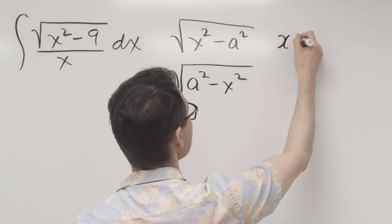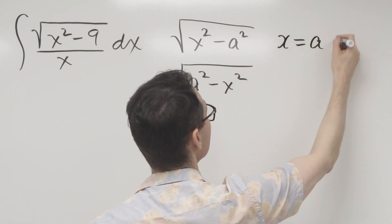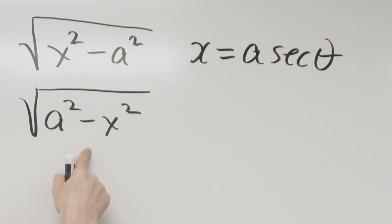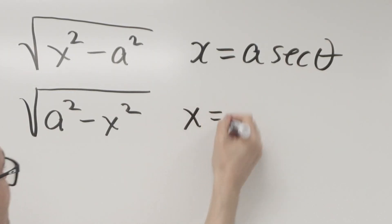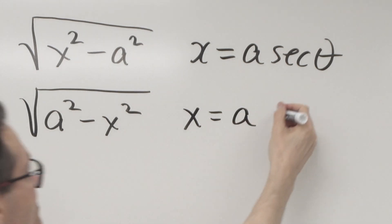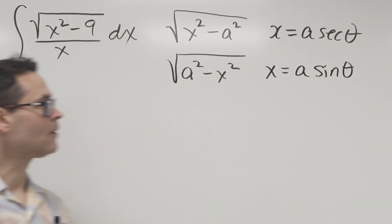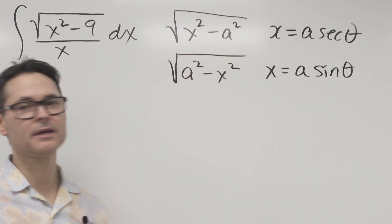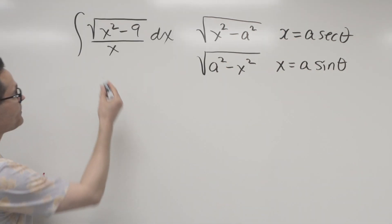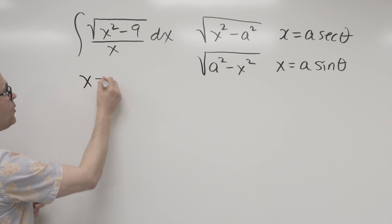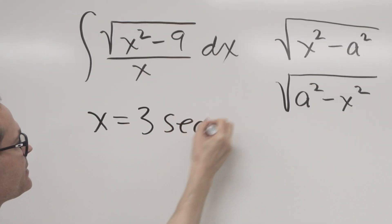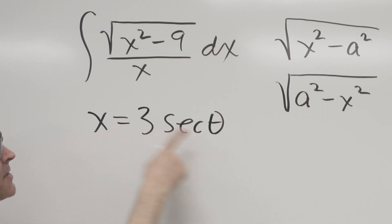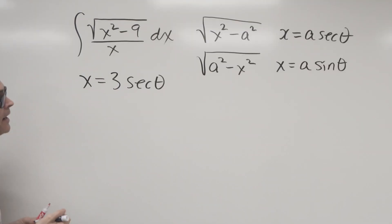So in this case, what we would do is let X equal, well whatever A is, I repeat it, and I use secant theta. And in this case here, whatever X is, I take A and multiply it by sine, so sine theta. So we're going to use the upper one because we're dealing with the variable in first spot. So what I'm going to do is let my X equal, my A value is 3, the square root of 9 is 3, secant theta. Notice I'm converting from just the number X, the variable X, to now a new variable theta.